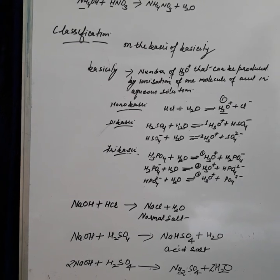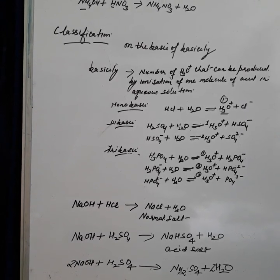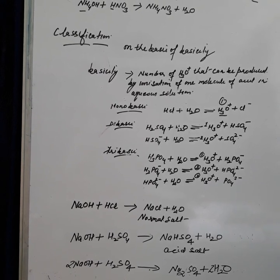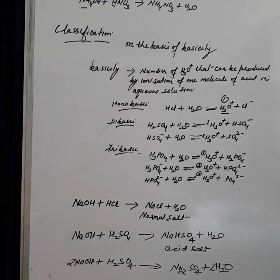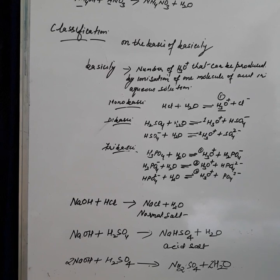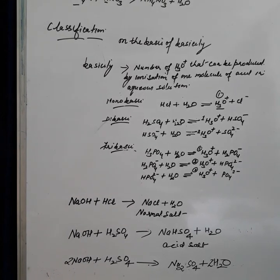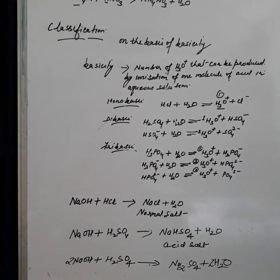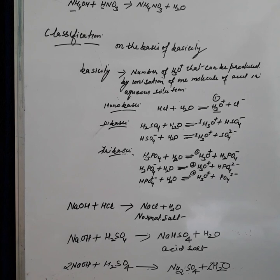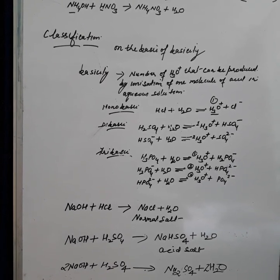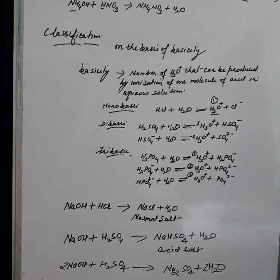The third criteria is on the basis of basicity of an acid. Basicity is the number of hydronium ions produced by one molecule of an acid when dissolved in water. On this basis, acids are divided into monobasic, dibasic, and tribasic acids. Monobasic acids are those which when dissolved in water form only one hydronium ion. For example, hydrogen chloride dissolves in water to form one hydronium ion and one chloride ion — it contains only one replaceable hydrogen.